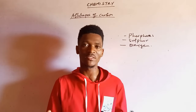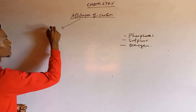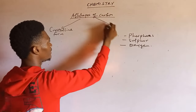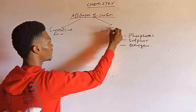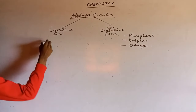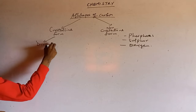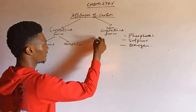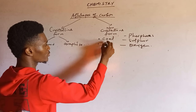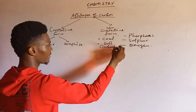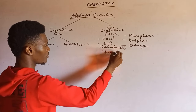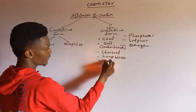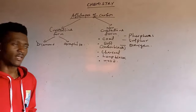Looking at the allotropes of carbon, we have the crystalline form and the non-crystalline form. The crystalline form has two divisions: we have diamond and graphite. For the non-crystalline form, we have diverse forms — we have coal, soot (also called carbon black), charcoal, lamp black, and wood. These are examples of the non-crystalline forms of carbon.